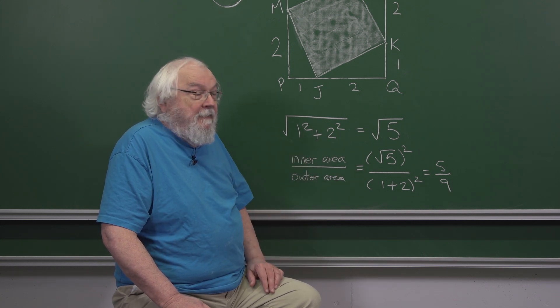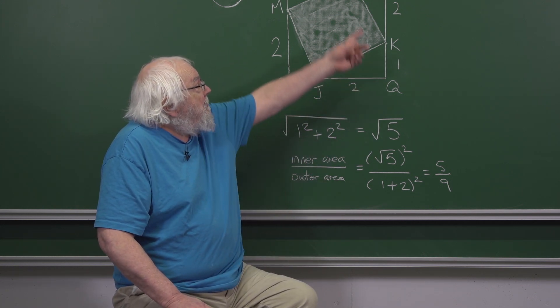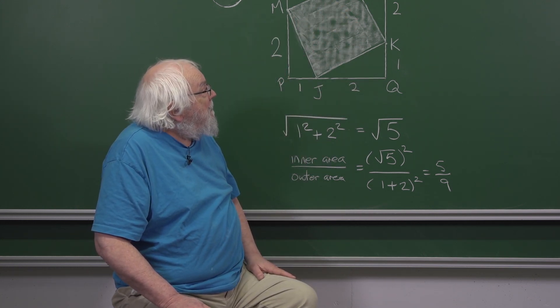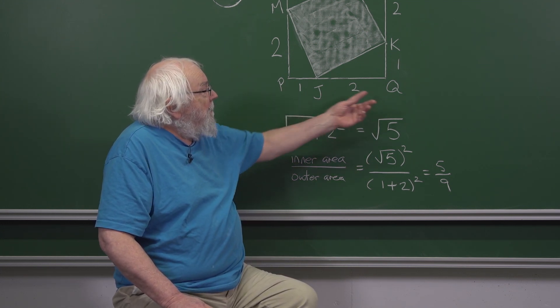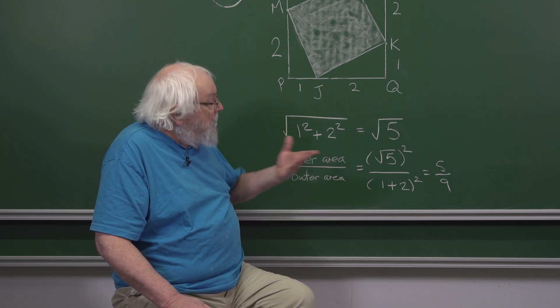The area of the whole square SPQR is, well, the sides have length 3. So 3 squared is 9.